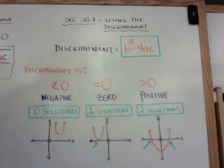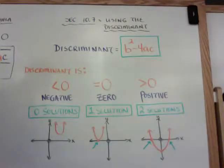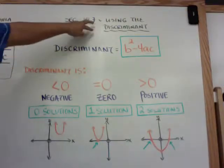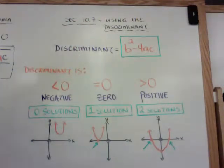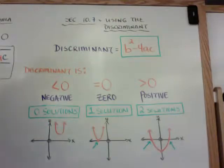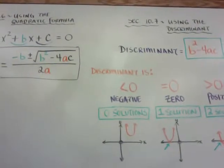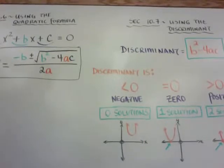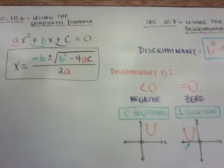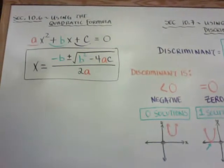Hi you guys, I hope you're doing good. This is section 10.7, which is using the discriminant. You're going to use a discriminant to find out how many solutions are in a quadratic equation. Before I get to what the discriminant is, let me review with you — section 10.6 was the quadratic formula.